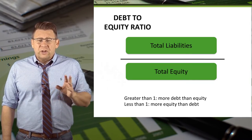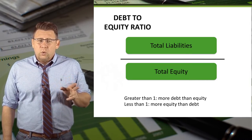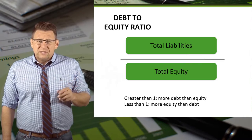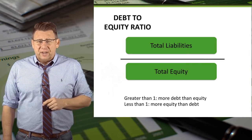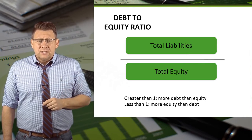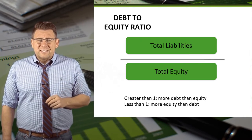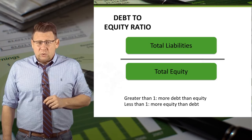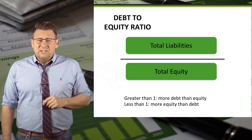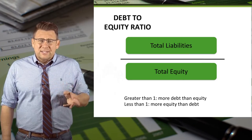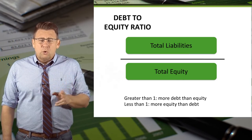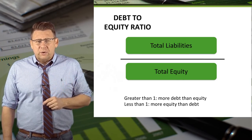When this ratio is greater than one, it means that the assets are financed more with debt. When this ratio is less than one, it means the assets are financed more with equity.